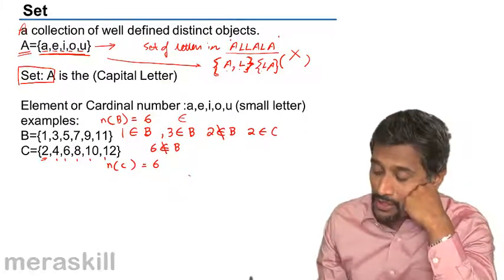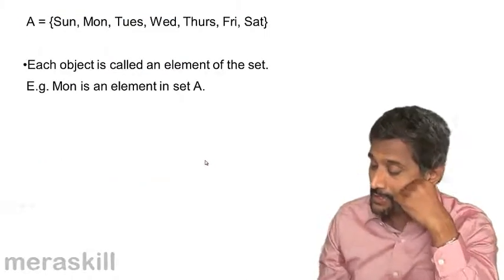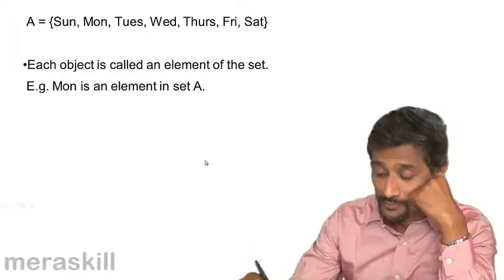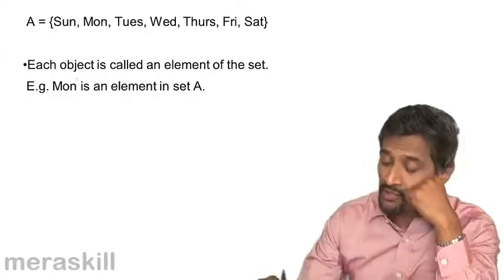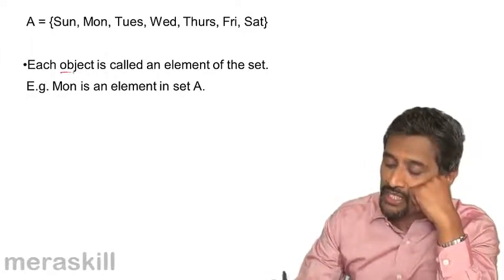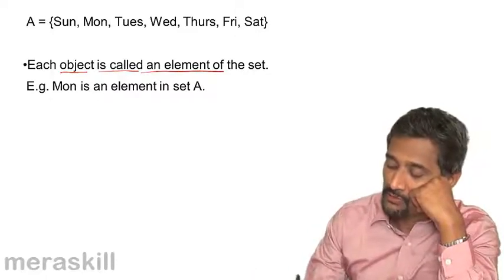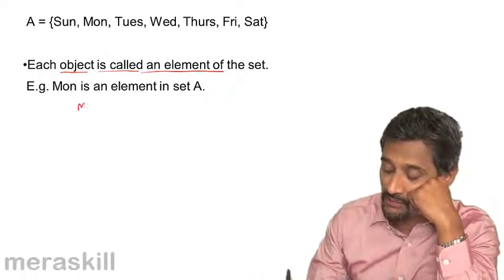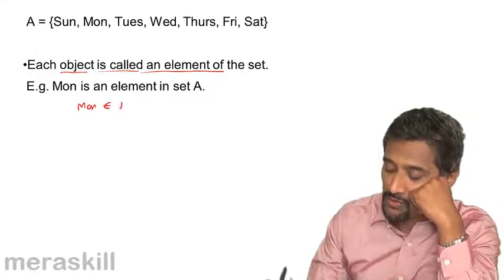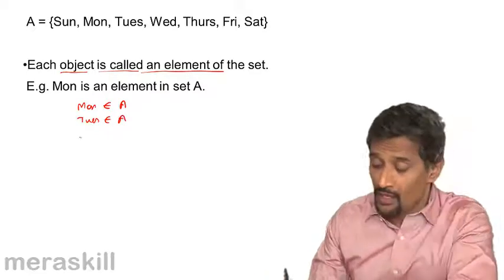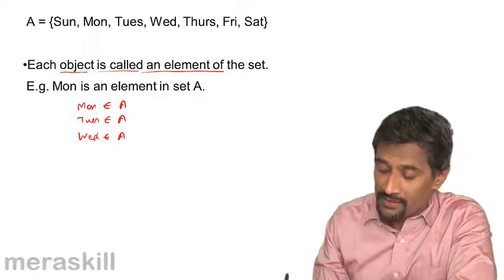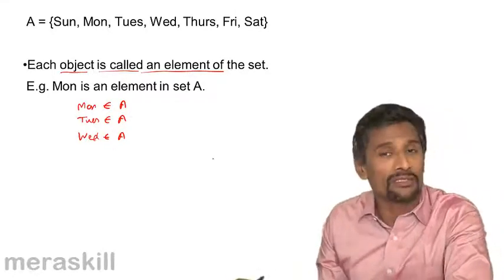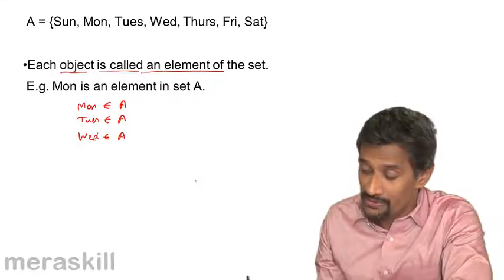These are some basic understanding concepts regarding sets. Now let's see how we apply what we learned. Here you have another example: A is Sunday, Monday, Tuesday, Wednesday, Thursday, Friday, Saturday. Each object or member of a set is called an element. For example, Monday is an element in set A, so we say Monday belongs to set A. Tuesday belongs to set A. Wednesday belongs to set A. Hence you have this way we represent this concept of element, just reiterating what we did in the previous case.